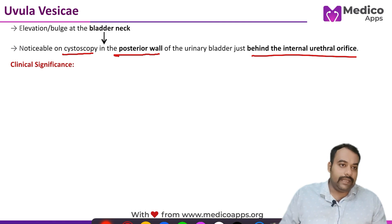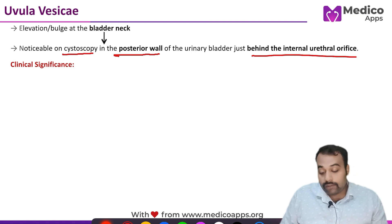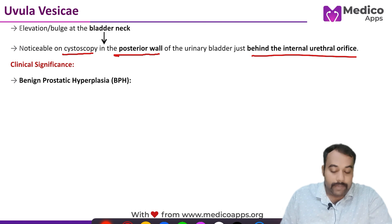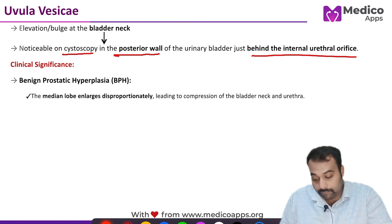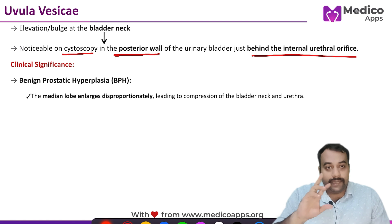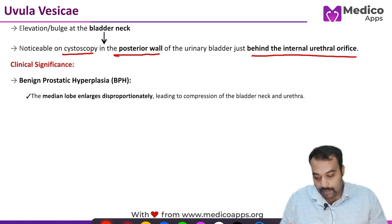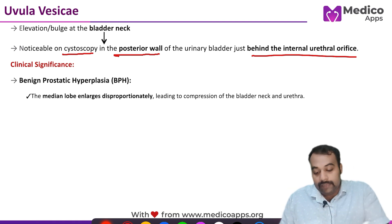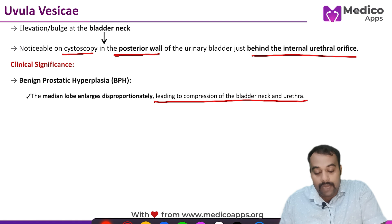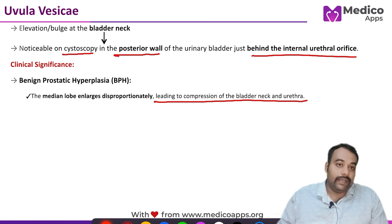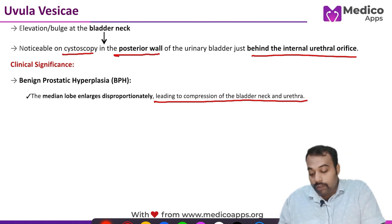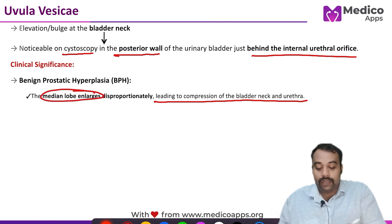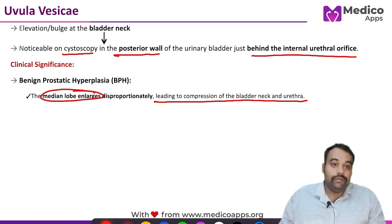The clinical significance is this: in case of benign prostatic hypertrophy or hyperplasia, what exactly happens is that the median lobe gets enlarged, and that enlargement typically happens disproportionately. This leads to compression of the bladder neck as well as the urethra.